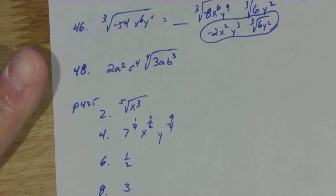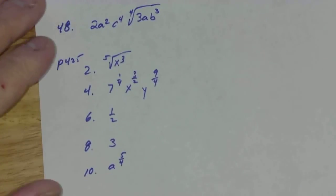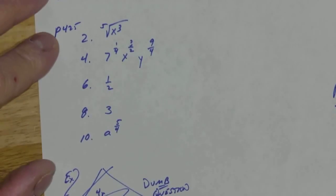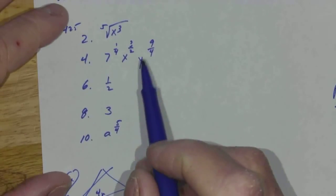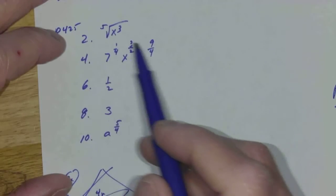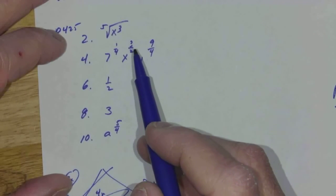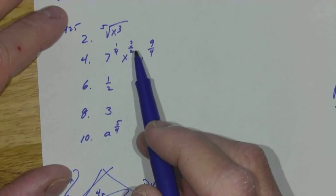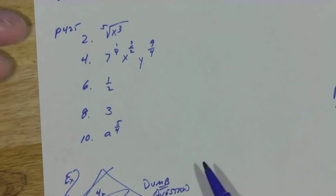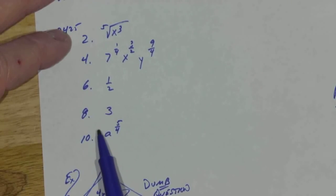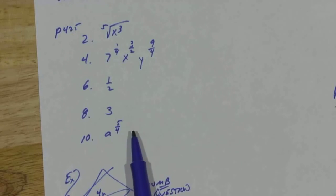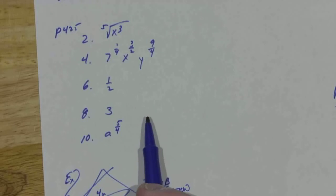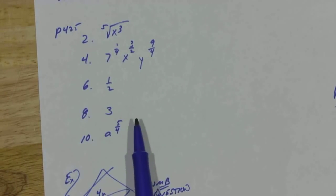And there's 48. And here's 425. Just a couple things on 425. Again, power's on the top, root's on the bottom. So this is the 3rd power, the square root. The 9th power, the 4th root. I think on 4, it originally would be 6 and 4. They just reduced it. And on 8 and 10, just make sure you go ahead and add your exponents when you can add them. Multiply them when you need to multiply them.